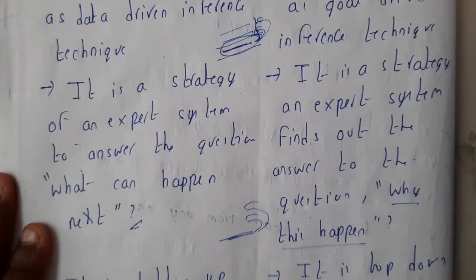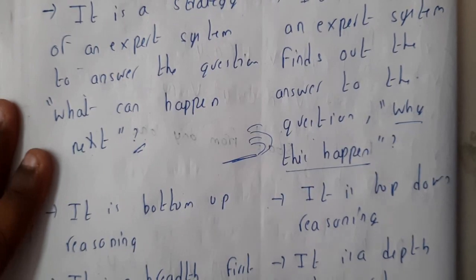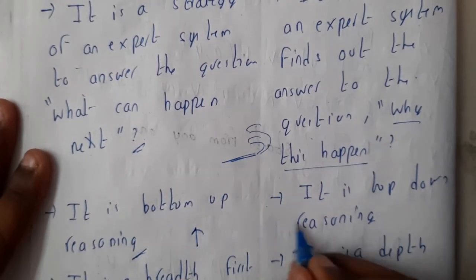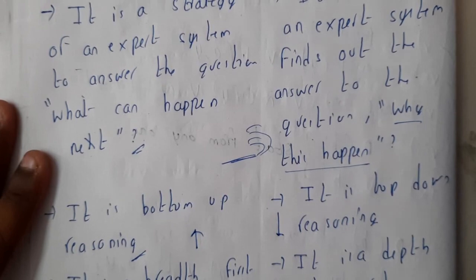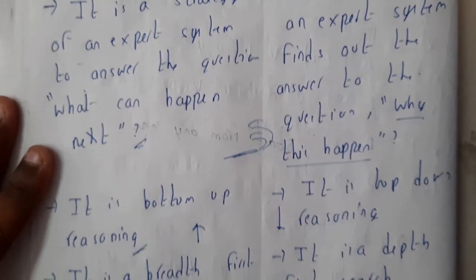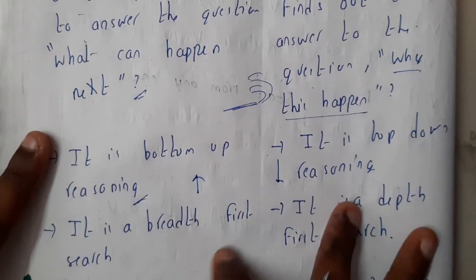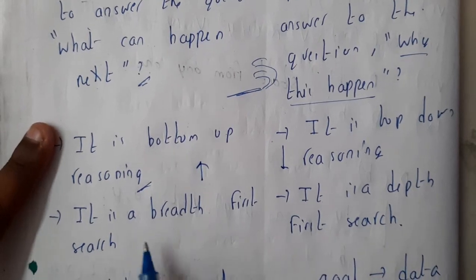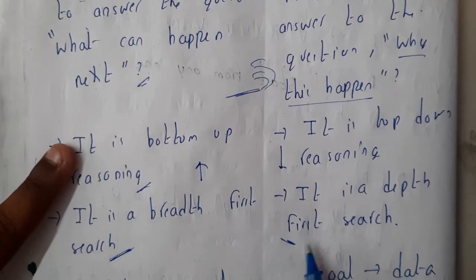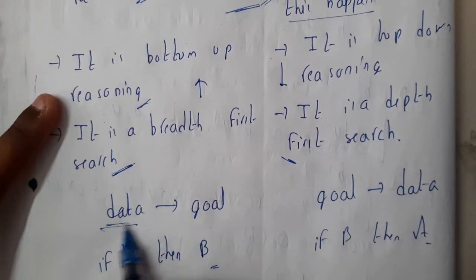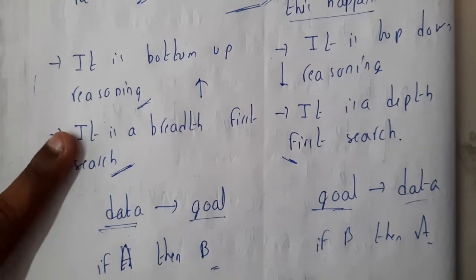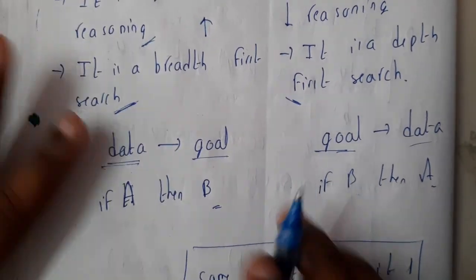Forward chaining is a bottom-up approach and backward chaining is a top-down approach — the approaches are reversed for each. Forward chaining uses breadth-first search, while backward chaining uses depth-first search. Forward chaining travels from data to goal, and backward chaining follows goal to data.